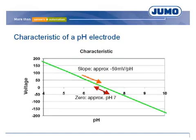The potential on the membrane glass results from the hydrogen ion concentration, or the pH value. The characteristic curve shows the potential depending on the pH value. The theoretical slope of the line is minus 59 mV per pH.